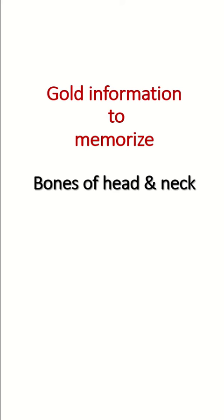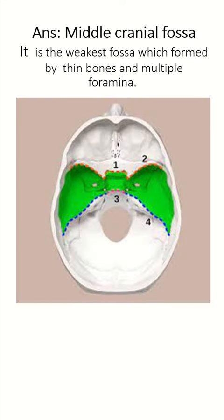Goal: information to memorize — bones of the head and neck. The most commonly fractured cranial fossa is the middle cranial fossa. It is the weakest fossa, formed by thin bones and multiple foramina.